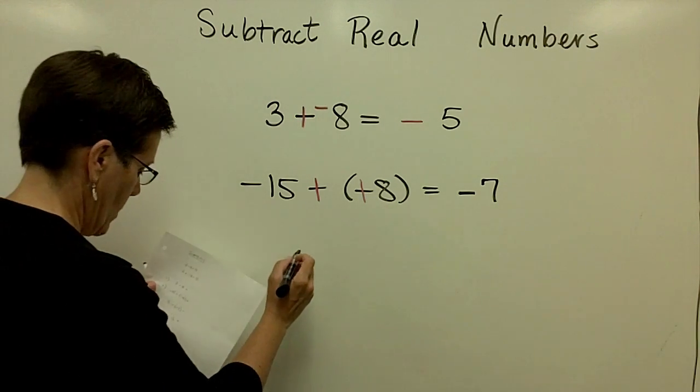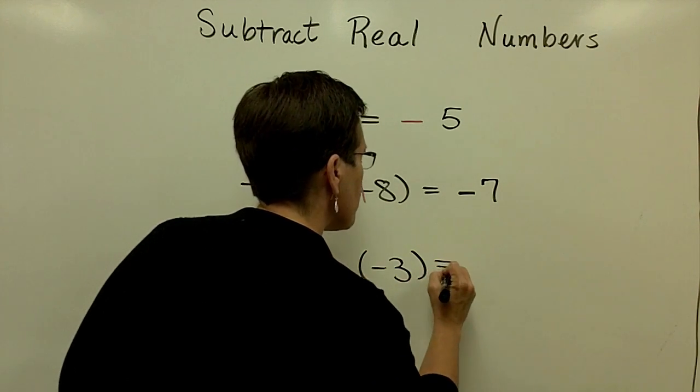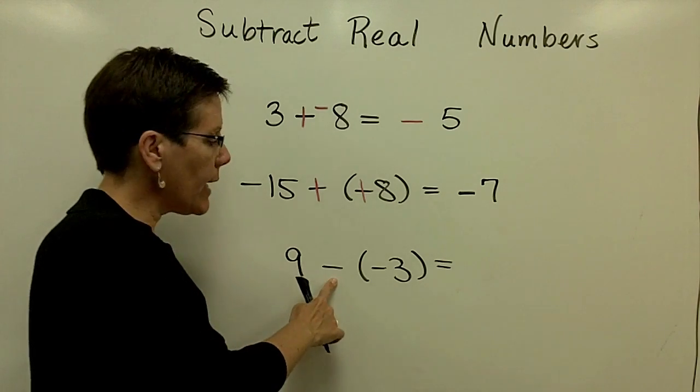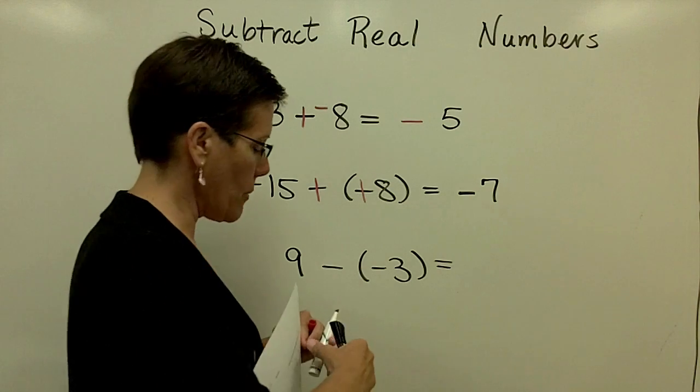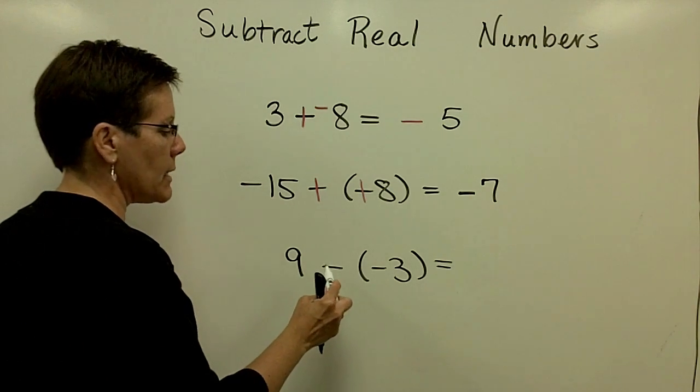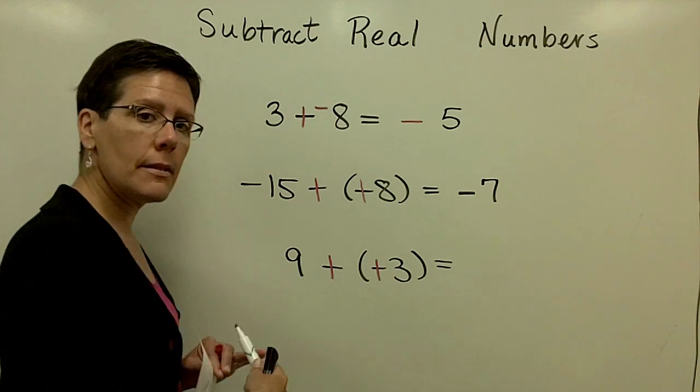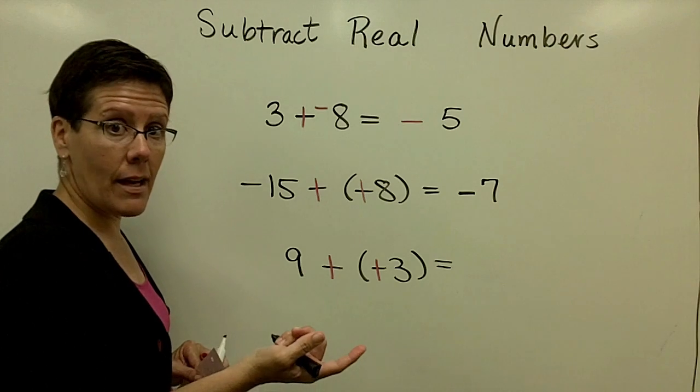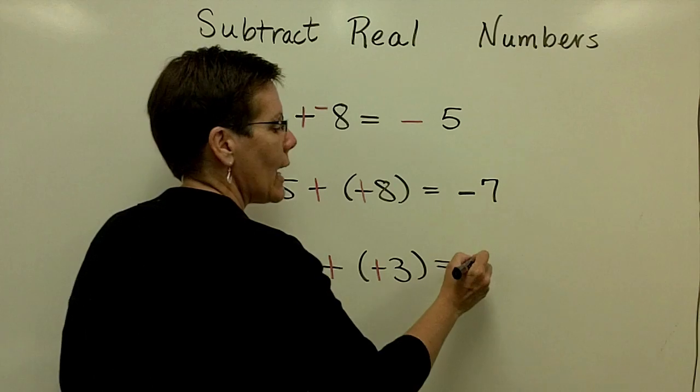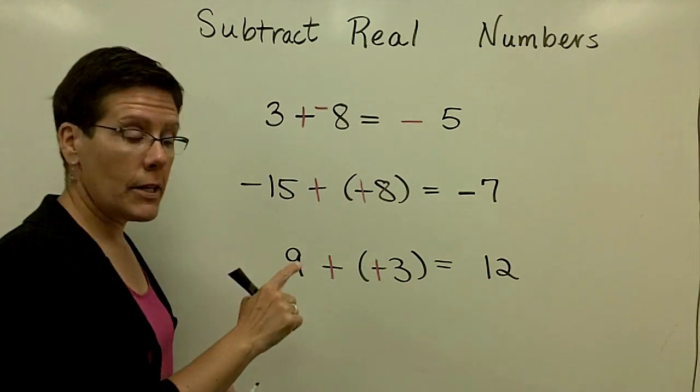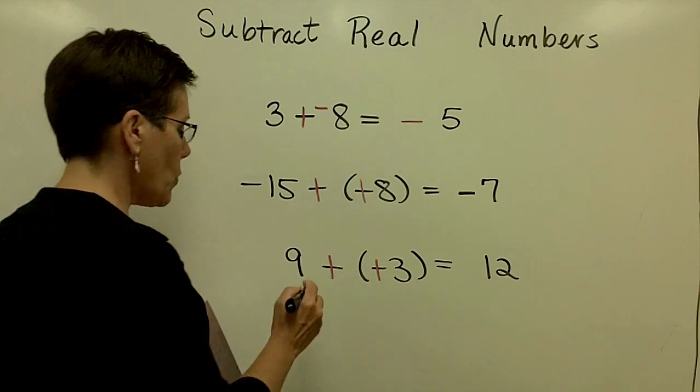Let's do another one. So I have 9 minus a negative 3. This is like having $9 and somebody takes away $3 of debt that you had. You're kind of better off in that problem. You're further ahead than that $9, but mathematically what we say is let's add the opposite. These two values have the same sign. Matter of fact, this is arithmetic as we know it all our lives. They are both positive numbers. We add their absolute values and we give the sign of our answer the common sign which is positive, which we typically don't write down. Let's do one more.